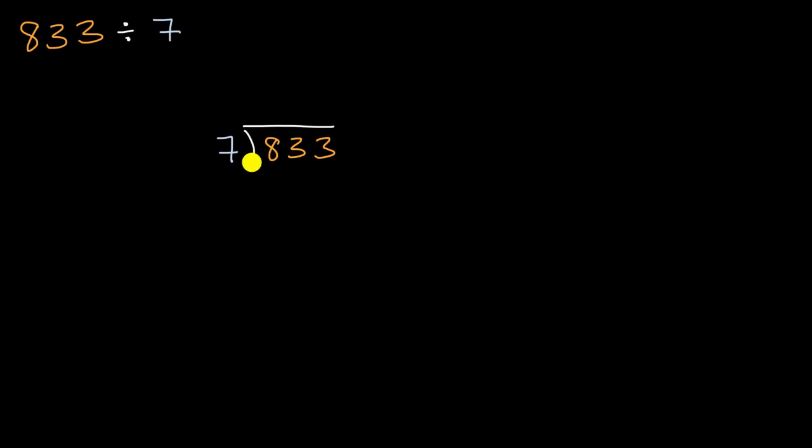So the way that division with partial quotients works, and once again, it's not the way that your parents probably learned how to do it, is you just say how many times can seven go into 833? I don't have to get it exactly. I just want to go under 833. And so my brain immediately thinks seven hundreds is less than 833, so we're going to go into 833 at least 100 times. And so what we would do is we would write that 100 up here. We want to be very careful about our place value.